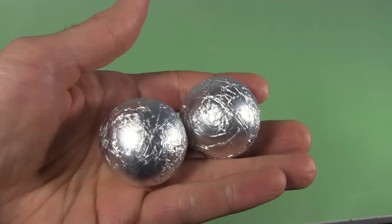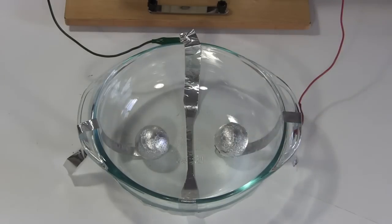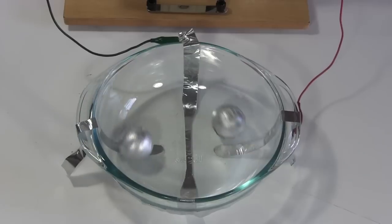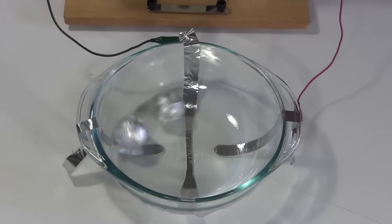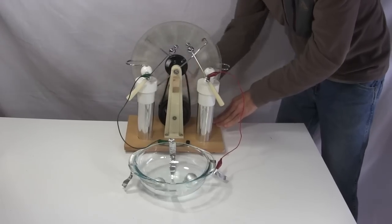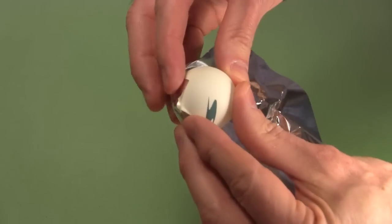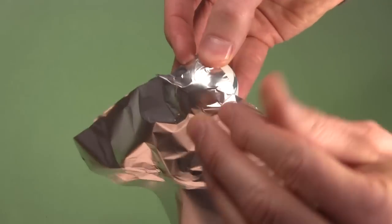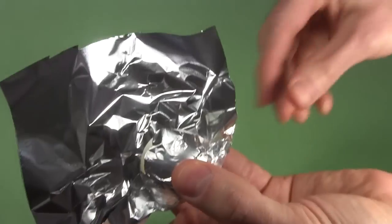But before I can test it, I'll need some balls. The balls have to have an electrically conductive surface, but should also be very lightweight if it's going to be powered by a Wimshurst machine, which isn't very powerful. So I have this ping pong ball, which I cover in aluminum foil, being careful to make it as smooth as possible.